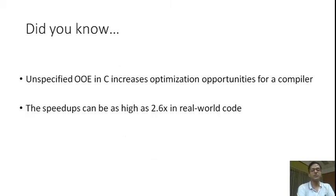The situation where the computation is unordered is also called unsequenced evaluations in C. In this talk, I am going to show that the unspecified order of evaluation semantics in C increases optimization opportunities for a compiler, and that the speedups can be as high as 2.6x in real-world code.